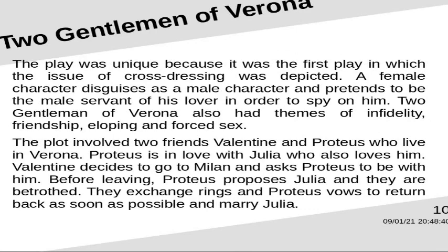The plot involved two friends, Valentin and Proteus, who live in Verona. Proteus is in love with Julia, who also loves him. Valentin decides to go to Milan and asks Proteus to join him. Before leaving, Proteus proposes to Julia and they are betrothed. They exchange rings and Proteus vows to return as soon as possible and marry Julia.